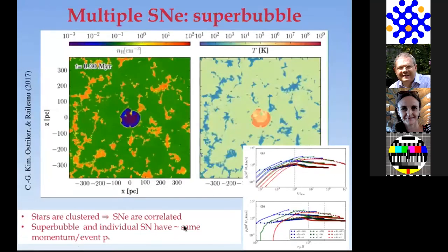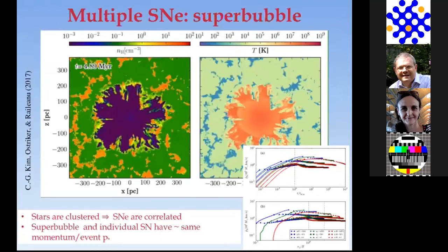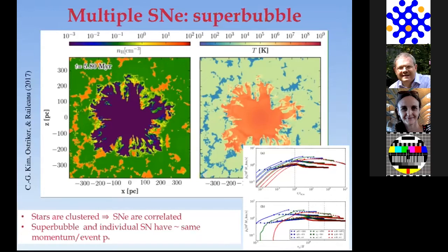Stars are correlated—young stars form in clusters—so you can have many supernova explosions one after another, creating a super bubble from a cluster. The momentum per supernova from the cluster simulation is really pretty similar to that from one individual supernova—still around 10⁵ solar masses km/s. That's a characteristic number for what you get from supernovae.